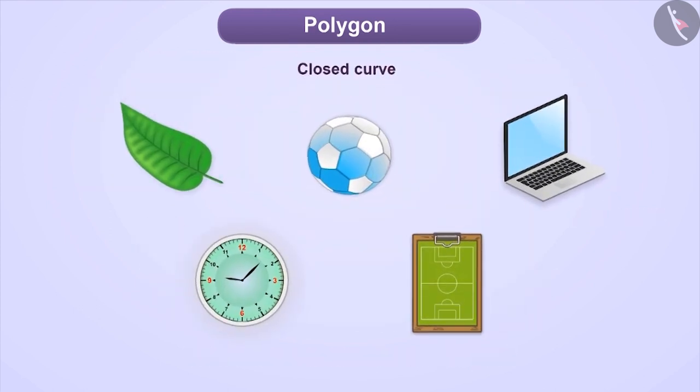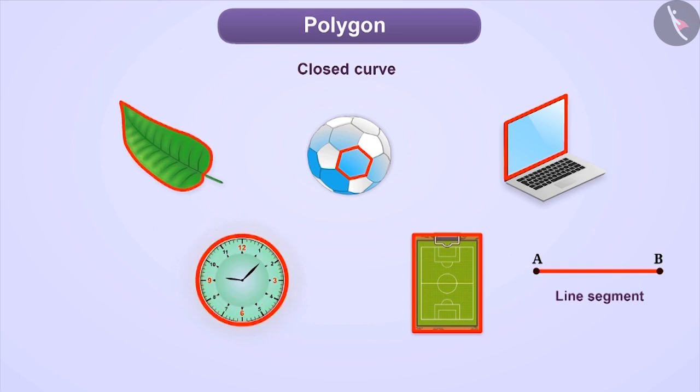Among these figures, some are made of line segments only, whereas some are not made of line segments. They are made up of curved lines which are not straight. We call figures made of line segments as polygons.